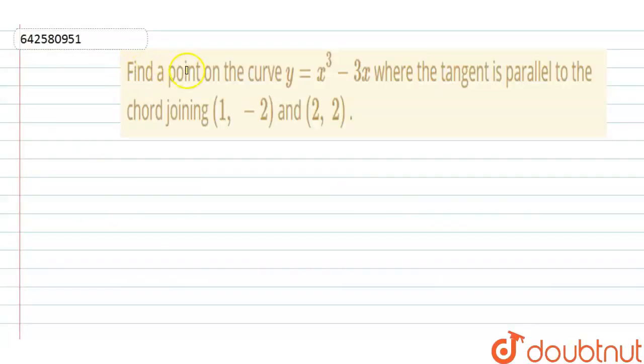Hello everyone. The question says to find a point on the curve y equals x cubed minus 3x where the tangent is parallel to the chord joining (1, -2) and (2, 2).